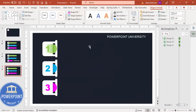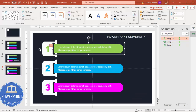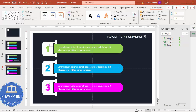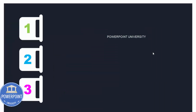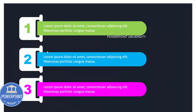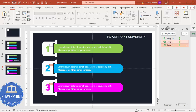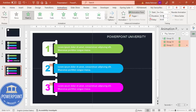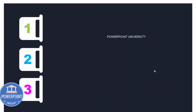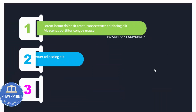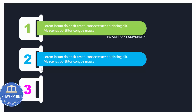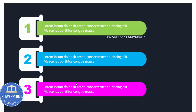Sometimes if you bring a shape to front incorrectly, the animation appears to come from the wrong position, which doesn't look good. Always make sure each option shape is set to Bring to Front so the animation appears to come from inside. Set the remaining two animations to On Click. When you run the slide show, each option animates in on click, one after another.